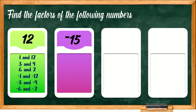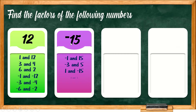Next, let us have negative 15. Since we are dealing with a negative number, we need to multiply two numbers with different signs — one positive and one negative. So the factor pairs are: negative 1 times 15, negative 3 times 5, positive 1 times negative 15, and positive 3 times negative 5. Therefore, the factors of negative 15 are: negative 1 and positive 15, negative 3 and positive 5, positive 1 and negative 15, and positive 3 and negative 5.